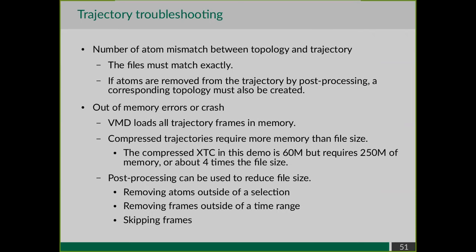There are two other errors you might encounter in VMD. First, VMD will often complain about a mismatch between the number of atoms in your topology and your trajectory. These files must match exactly - the same number of atoms. For instance, if you post-process your trajectory to remove the water because you're only interested in the protein, you also need a corresponding structure file with only the protein. You need to make a new topology every time you do post-processing that changes the number of atoms.